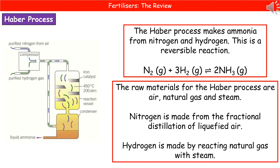A very important process in the manufacturing of fertilizers is the Haber process. It makes ammonia — the base of many fertilizers — using just nitrogen and hydrogen gases in a reversible reaction. The nitrogen comes from the fractional distillation of liquefied air, and hydrogen is made by reacting natural gas with steam. So the only raw materials are air, natural gas, and steam.